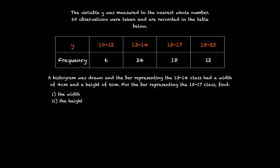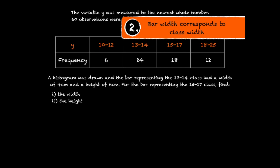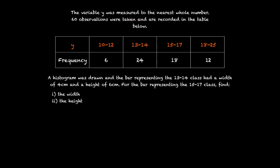In order to find the width, let's refer back to the second characteristic we mentioned about histograms. The bar width corresponds to the class width. The class width of the 13 to 14 class is 2, because we know the class boundaries are 12 and a half and 14 and a half. And the class width of the 15 to 17 class is 3, because we know that the class boundaries to that are 14 and a half to 17 and a half. And so the class width of the 15 to 17 class is 1 and a half times the class width of the 13 to 14 class. And so the bar width of the 15 to 17 class is 1 and a half times the bar width of the 13 to 14 class. And so 1 and a half times 4cm is 6cm.